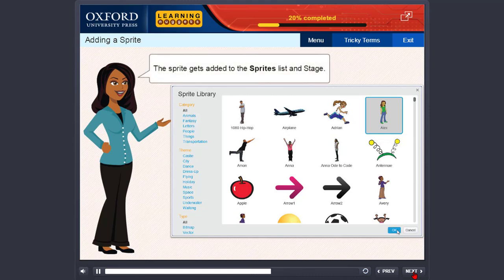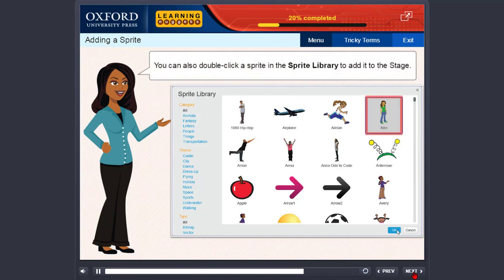The sprite gets added to the sprite's list and stage. You can also double click a sprite in the sprite library to add it to the stage.